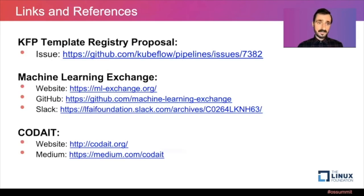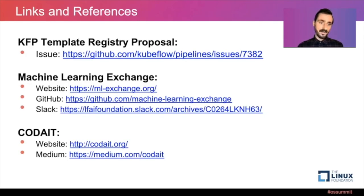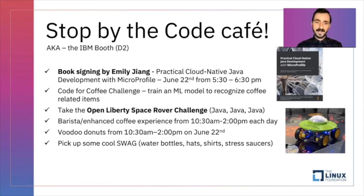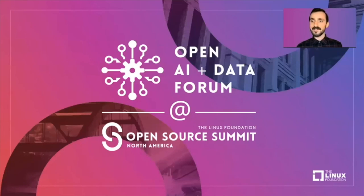Before I sign off, here is a list of links and references. Kubeflow Pipelines issue 7382 has links to the design spec for the template registry API and SDK. The Machine Learning Exchange can be found at ml-exchange.org, on GitHub, and on Slack. Also stop by the Code Café or the IBM booth — there's a book signing by Emily Yen and you can take the Open Liberty space rover for a spin. Thank you and see you next time.